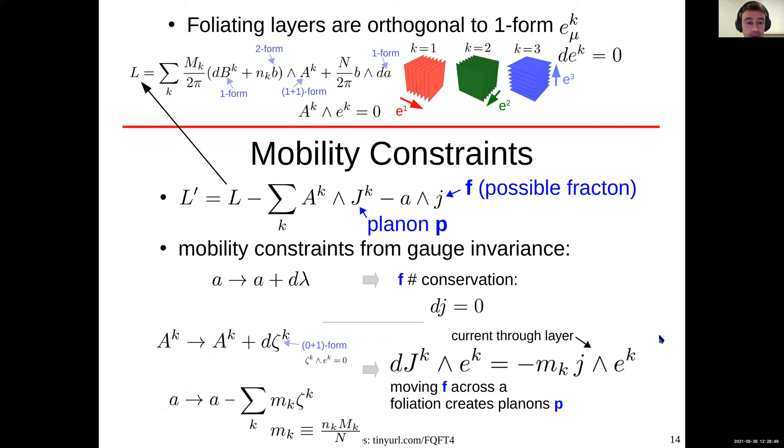Now let's move on and see how we can think about the mobility constraints of the fractons and planons. I like to think about this by coupling the Lagrangian to some source terms. So we'll couple big A to big J and little a to little j. Big J will always describe a fracton, while little j can describe fractons, lineons, or planons. But if you have three foliations, it typically describes a fracton. So how does this work? We see this by implying or enforcing gauge symmetry on this Lagrangian. If we do a gauge transformation of little a, in order for this to be symmetric, we need to require that d of little j is equal to zero. And physically this implies that the fracton number is conserved.